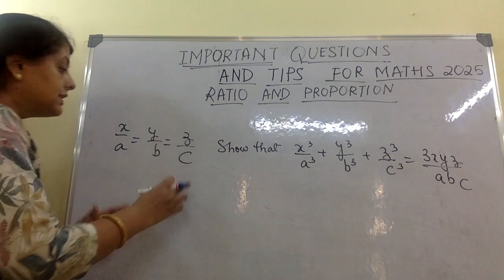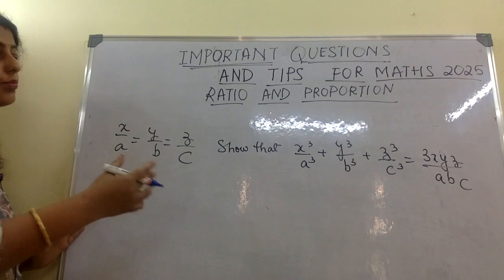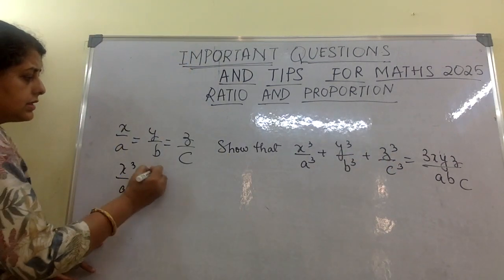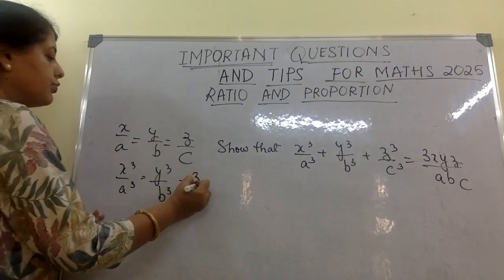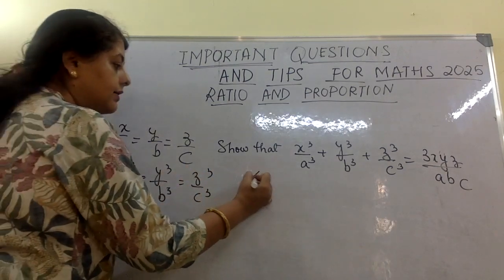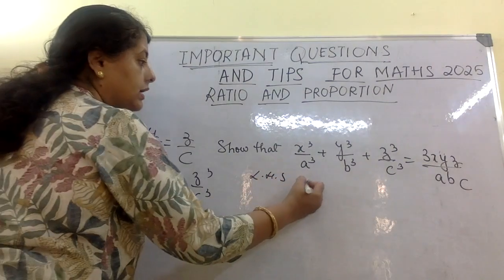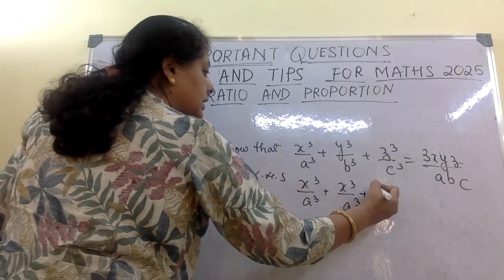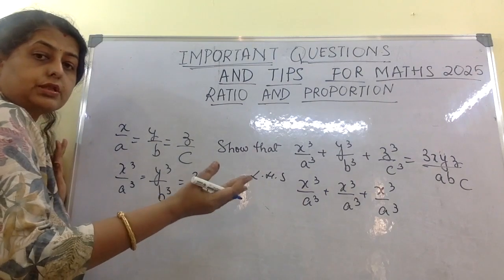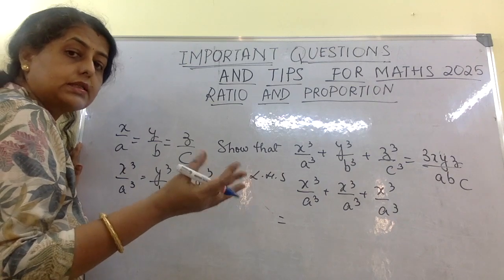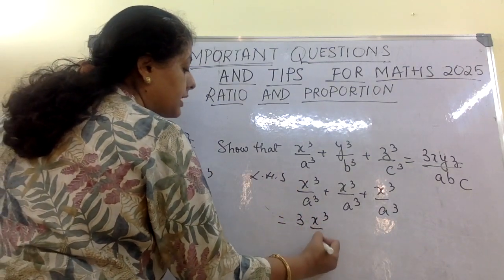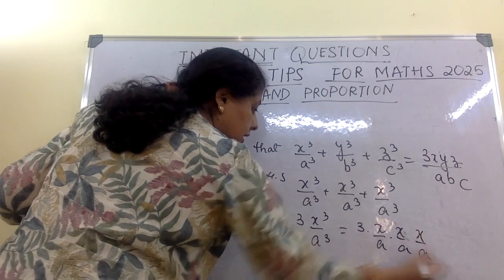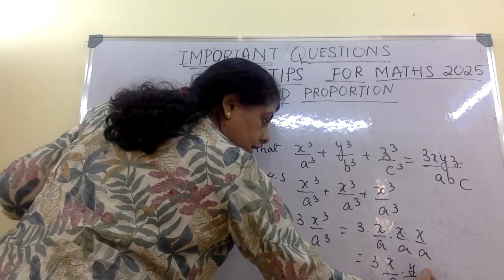Next important question: given the condition, we need to prove the result. I can see cubes involved — x³/a³ — so let's cube both sides. Cubing the LHS and adding the terms: since all three ratios are equal, I substitute and get x³/a³ + x³/a³ + x³/a³, which is 3x³/a³.